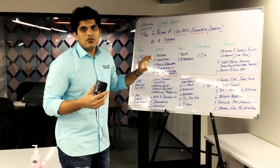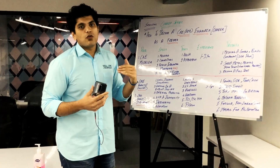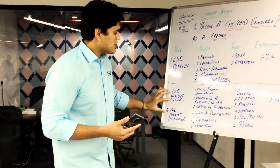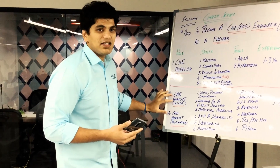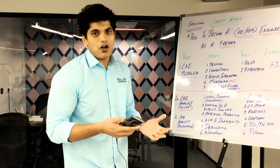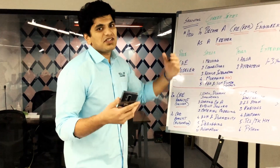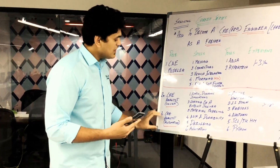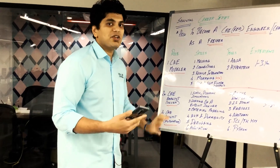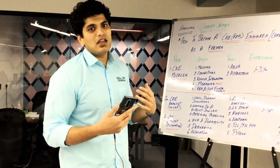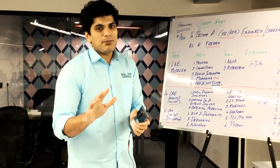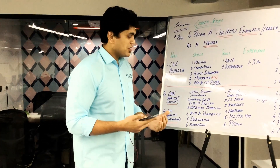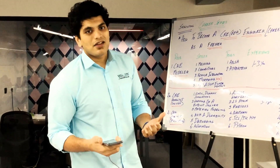Once you've spent around one year as a CAE modeler, you'll want to move up to the next role. There are two parts to the next level. The first is called CAE Analyst, who essentially uses the solver to solve the meshed components provided, setting up the simulations. The second is CAE Analyst Automation, where people automate the meshing process.